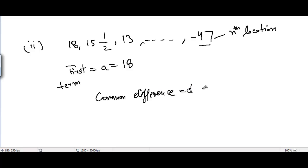d equals 15½ - 18, which equals 31/2 - 18. I get 2 as LCM and 31 - 36 here, which equals -5/2. So common difference equals -5/2.